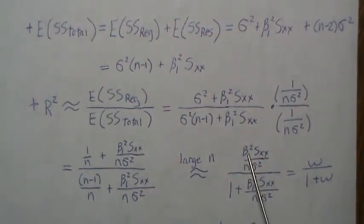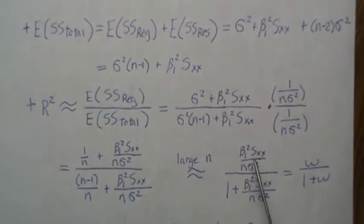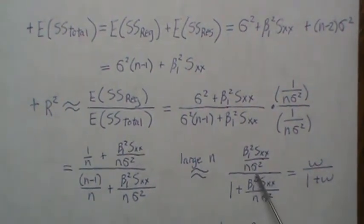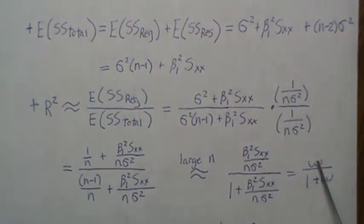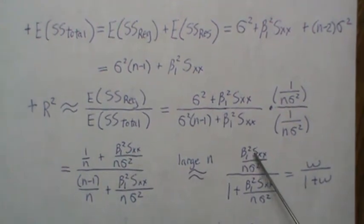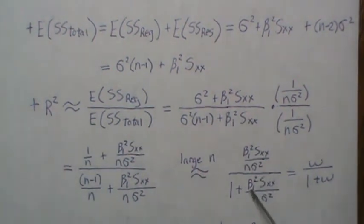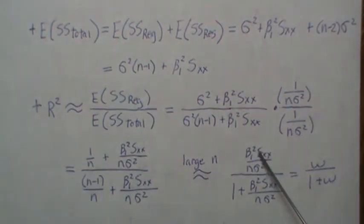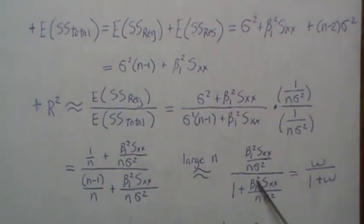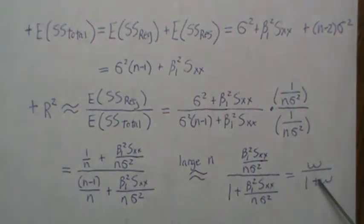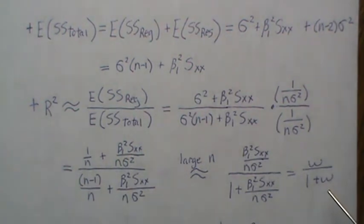The signal here is beta_1² · Sxx — the slope and how spread out the x values are. The noise is n · sigma². Defining omega = beta_1² · Sxx / (n · sigma²), the ratio becomes omega / (1 + omega). If the signal is high and noise is low, omega is large and the ratio approaches one. If the signal is low and noise is high, omega approaches zero. That's why R² is sometimes called a signal-to-noise ratio statistic.